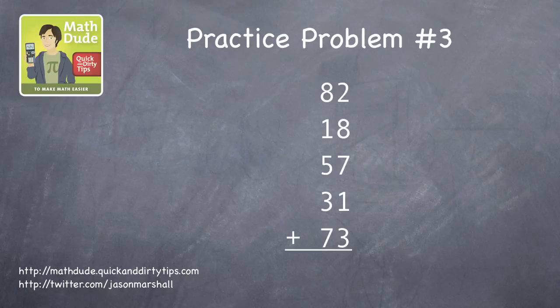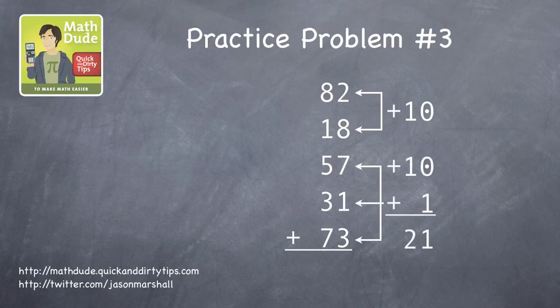On to a little bit of a tougher problem, but it's really the same thing. Look at the ones column for pairs of numbers that add to 10. 8 and 2 is 10, 7 and 3 is 10, so that's 20, plus 1 is 21.